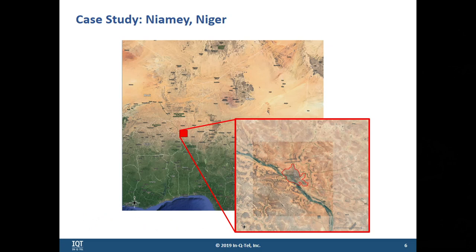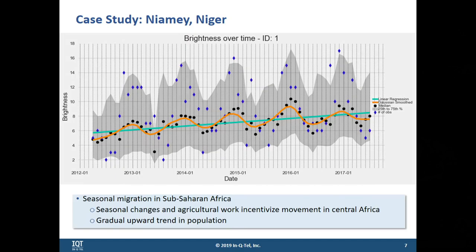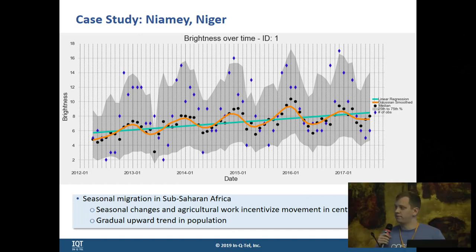As a case study, Niamey, Niger, is in sub-Saharan Africa, and it is a location where we see a lot of seasonal migration patterns. Often in the wet season there's more agricultural work available, so people tend to leave the city, and in the dry season they come back into the city for jobs. This is important because there have been quite a few measles outbreaks in Niger over the past years, and estimating where people are is really important for delivering vaccines and aid to areas in need. Nighttime lights can be used as a proxy to estimate where people are over time.